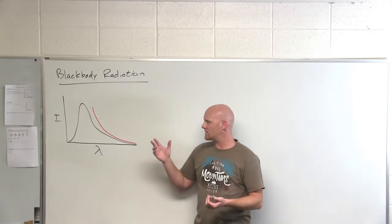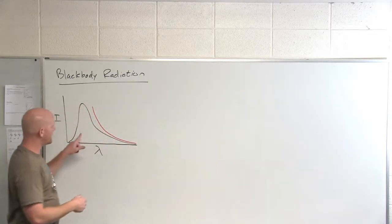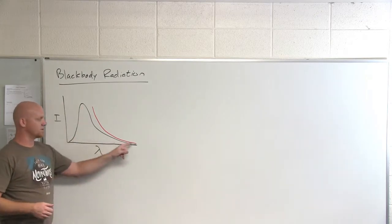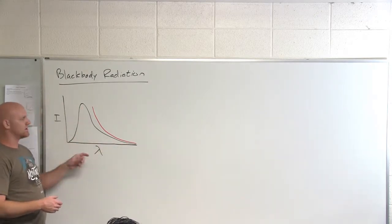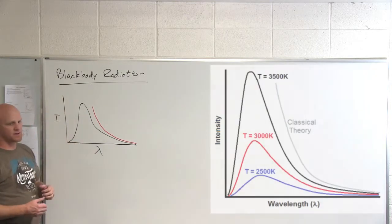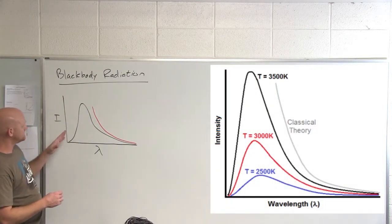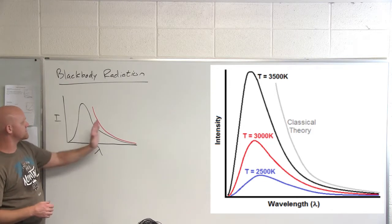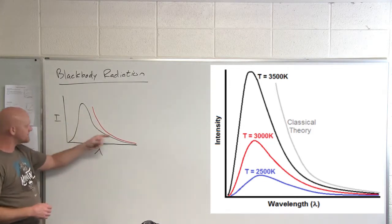Black body radiation had a big problem. Here, this is what black body radiation really looks like. As a function of wavelength, you have some certain maximum intensity at a certain wavelength. As you change the temperature, as you increase the temperature, it shifts towards lower wavelengths and you get a lot more area under the curve.